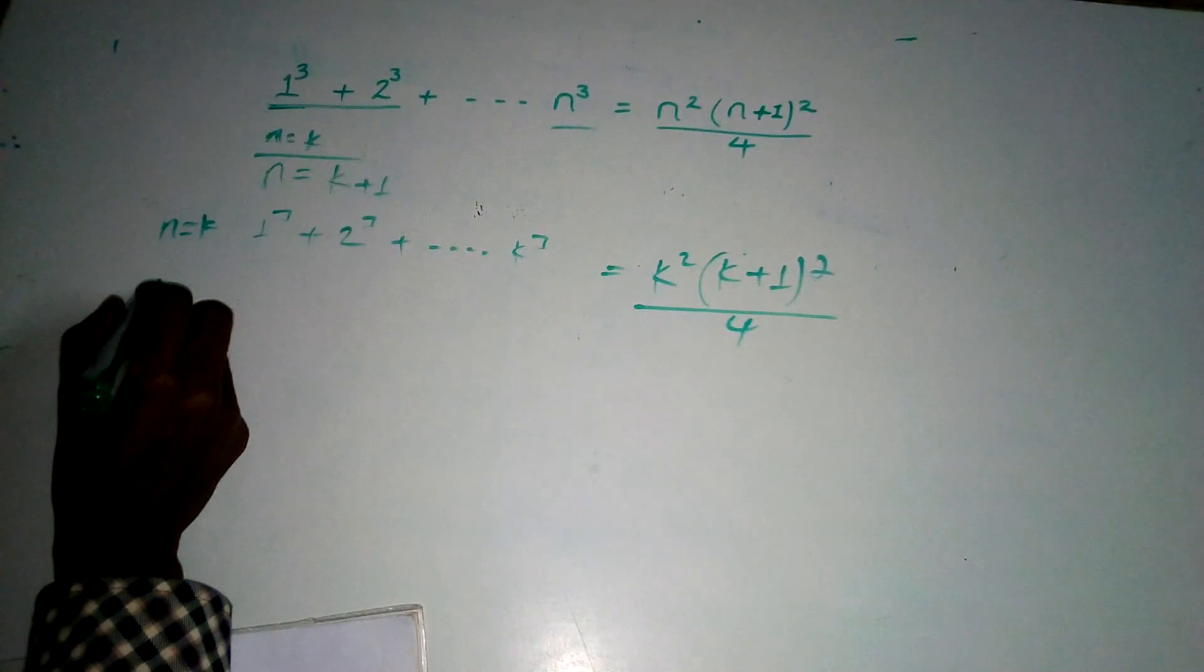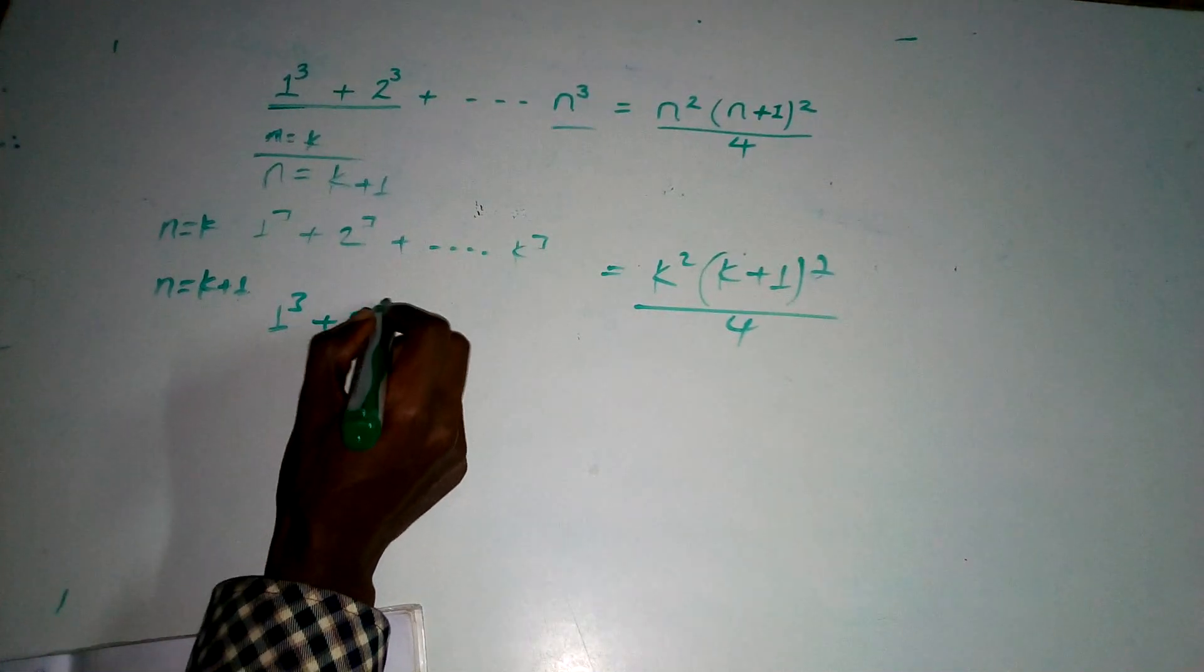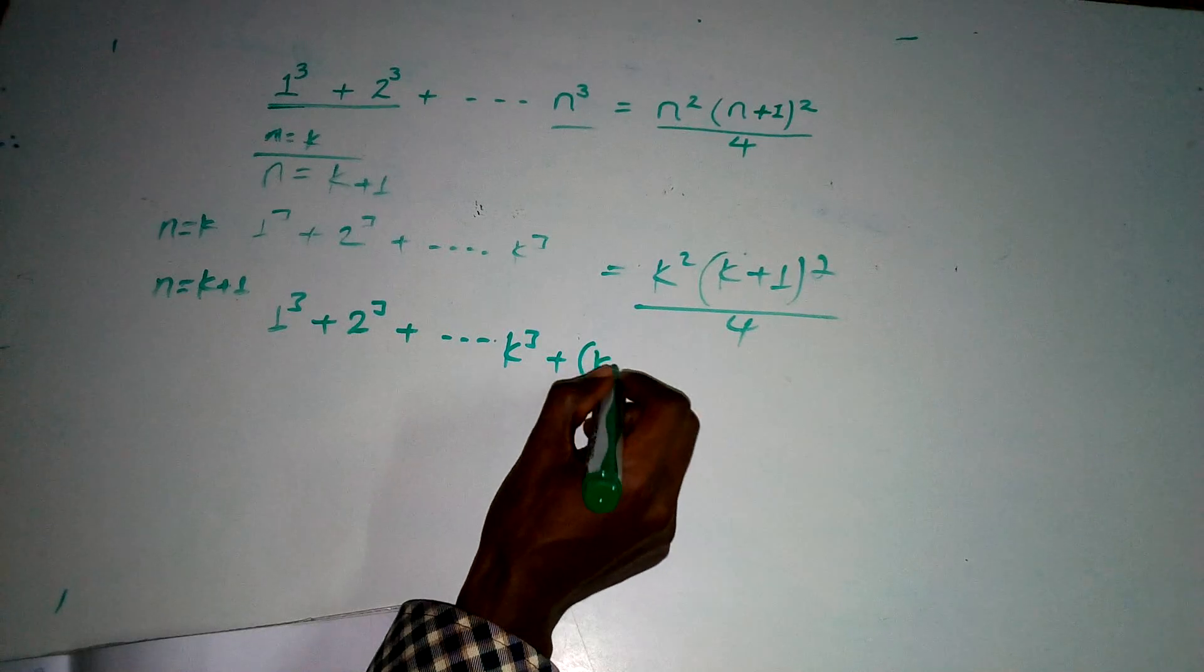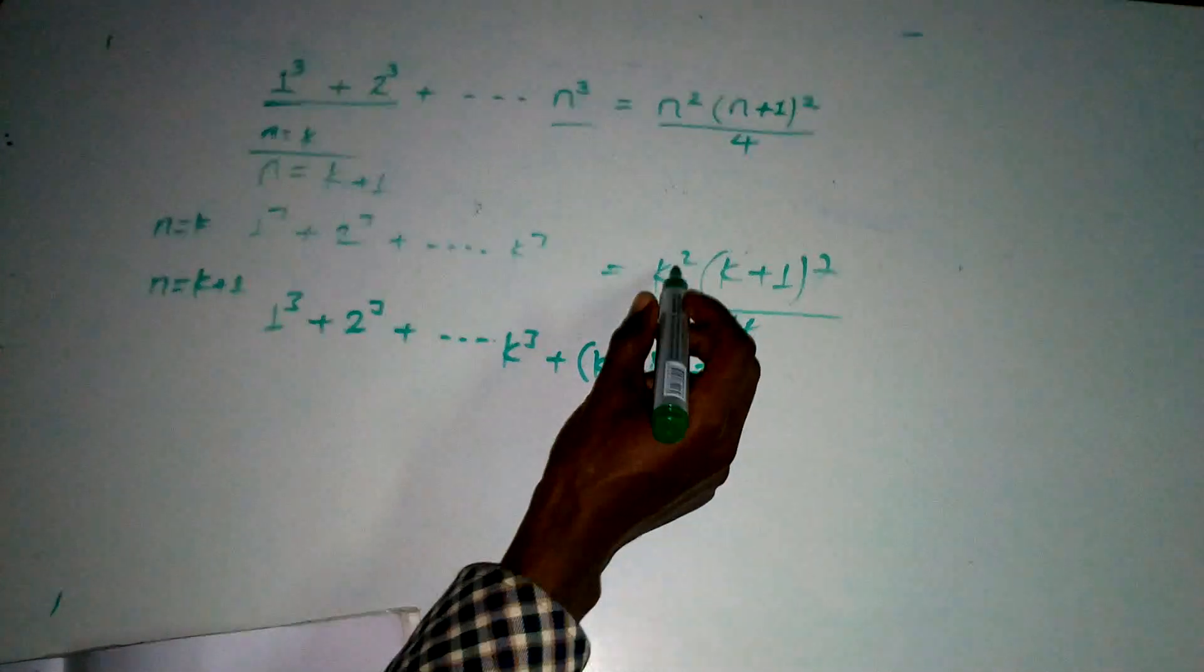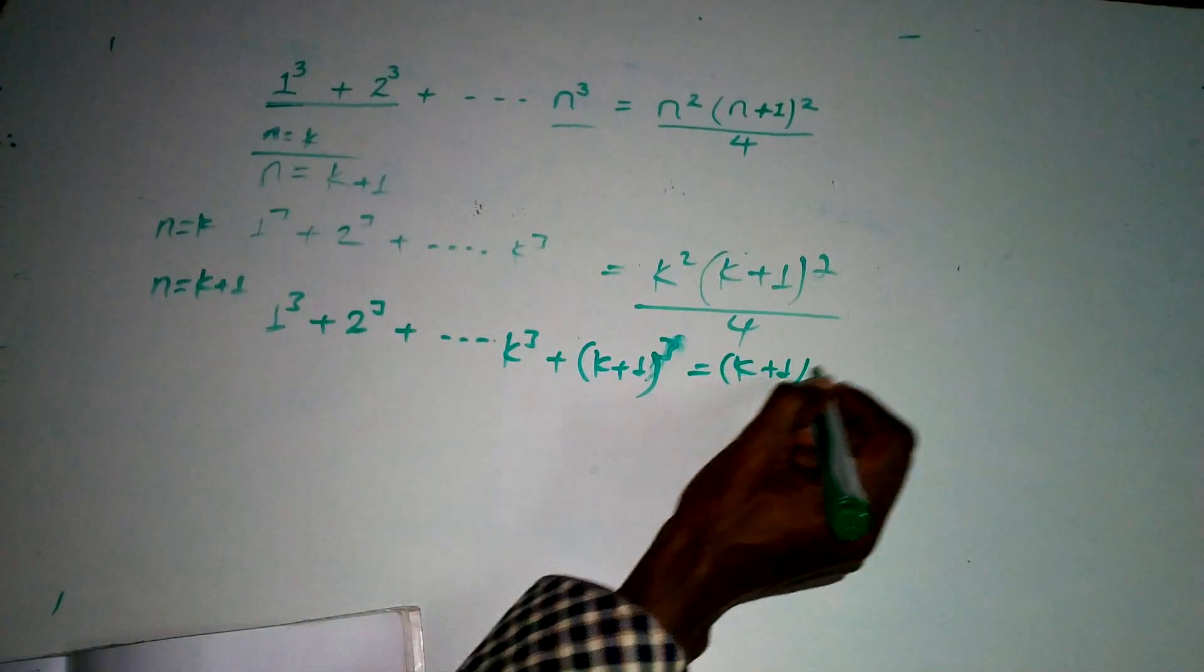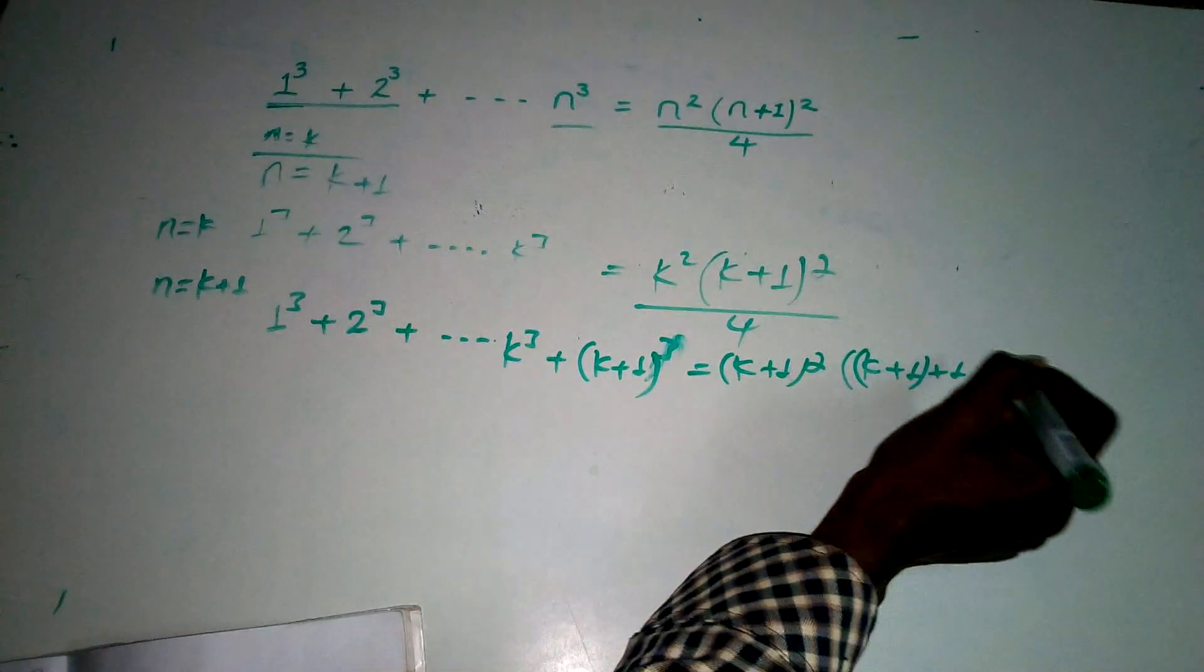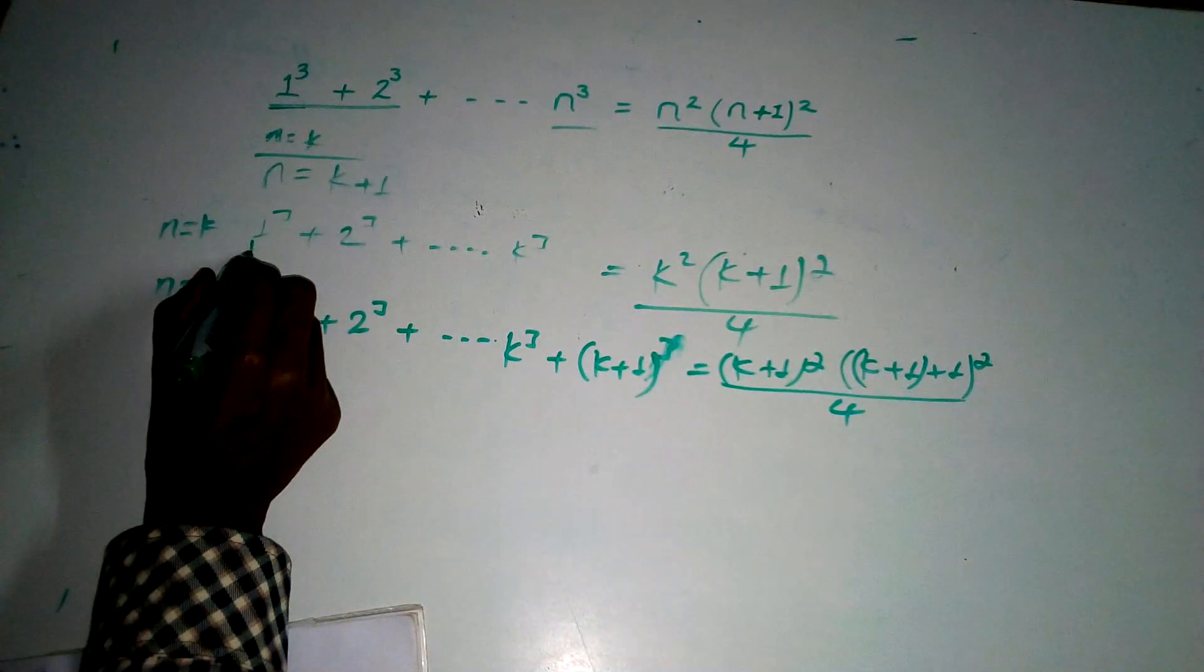Now for n is equal to k plus 1, we have 1 cube plus 2 cube plus dot dot dot k cube plus, where n is equal to k plus 1, in the bracket k plus 1 the whole cube. This should equal k plus 1 squared in the bracket k plus 1 plus 1 the whole square over 4.